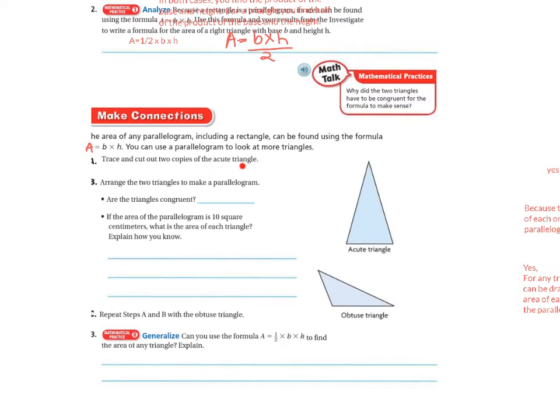You can use a parallelogram to look at more triangles. Trace and cut out two more copies of an acute triangle. So here's an acute triangle, and there's my obtuse triangle. Remember, acute has a cute little angle, and an obtuse has a very large angle. And then the right one is the one where it's 90 degrees. And that's what we did before, was the right triangle.